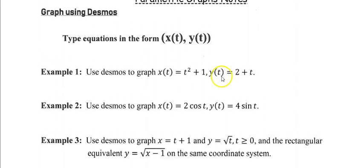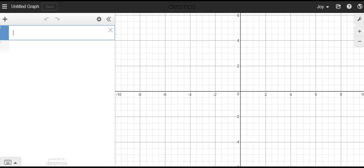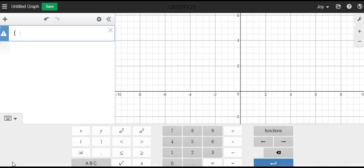So if you'll go to Desmos and open that up. Our first example, we have x of t is t squared plus 1. I'm going to put in t squared plus 1, comma, and then the y equation is 2 plus t. And I'm going to close my parentheses.